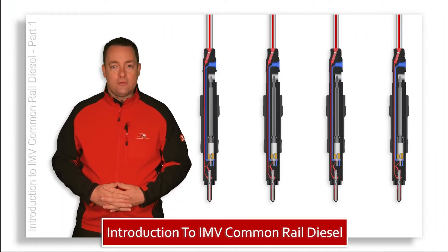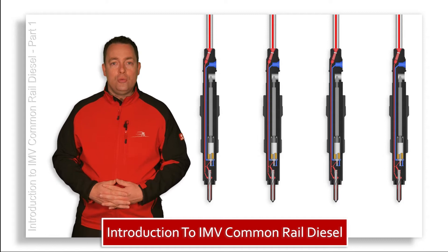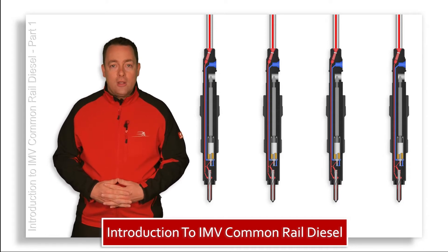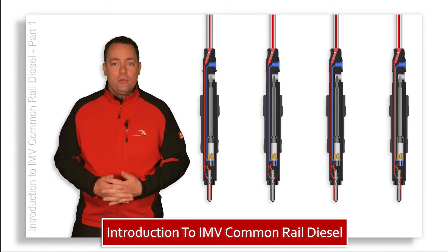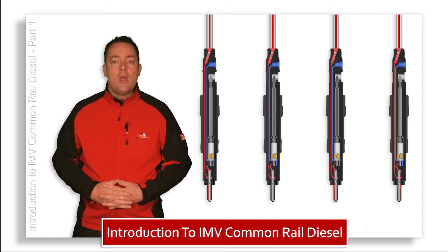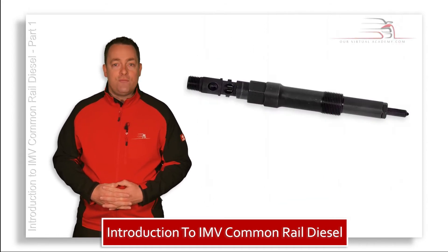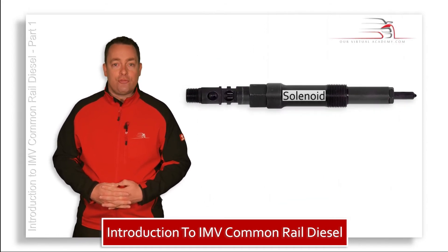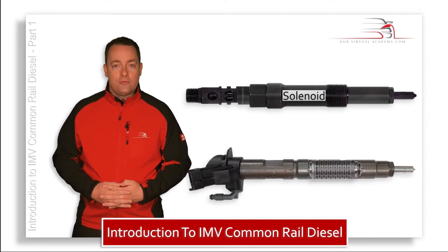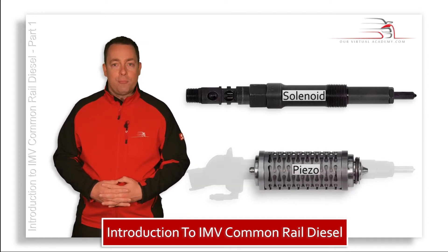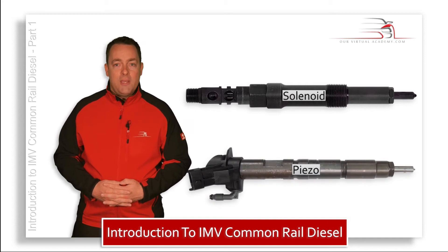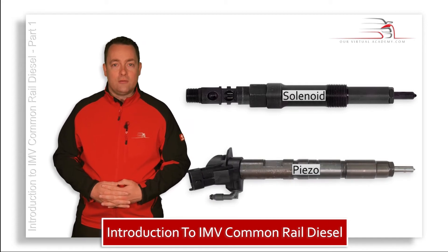Common rail injectors fall into two basic types based on the manner in which they are actuated. One type uses a solenoid and are referred to as solenoid operated injectors, and the other type uses a piezo stack and are referred to as piezo injectors.